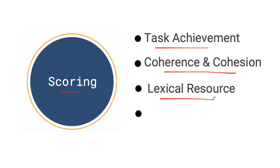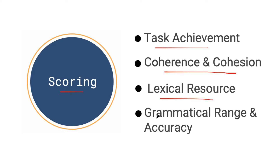Remember, this is an exam and you want to use formal language. The last scoring point is grammatical range and accuracy. Students usually find this a bit difficult because it's somewhat unusual to use a wide range of grammatical structures in one piece of writing. This could include past perfect, past perfect continuous, and passive voice. A lot of students struggle to fit various types of grammar and different structures into one essay.